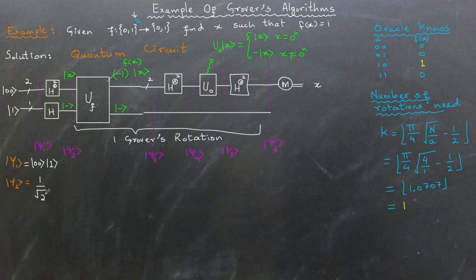The second register transforms to the state |−⟩.